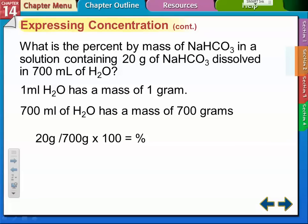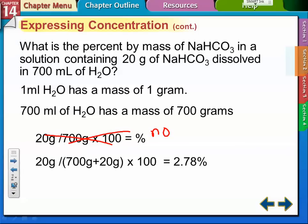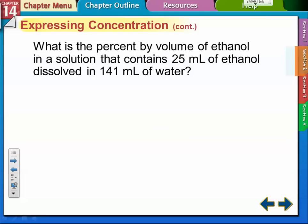You may be tempted to do the problem like 20 grams divided by 700 grams, but that's not the right way because the mass of the whole solution is the mass of the water plus the mass of the solid combined. So it's 20 divided by 720 times 100, so you get 2.78 percent.